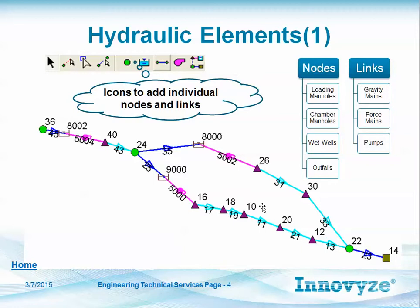The purple elements are the pumps, blue is a gravity main, and the light blue are force mains. The rules in InfoSewer are pretty simple: you have a wet well, it connects to a pump, it connects to a chamber manhole, it connects to a force main, and it ends up in a loading manhole. You can't have force mains go to outfalls — you always have to have a gravity main connected to the outfall.